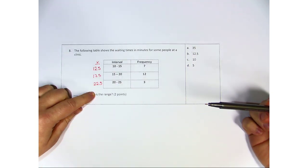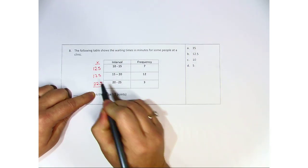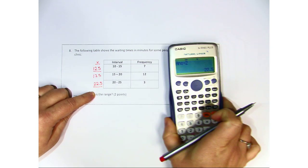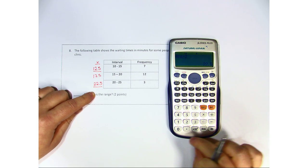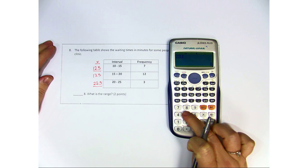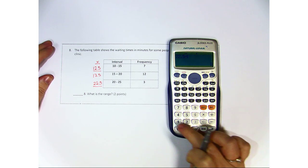the maximum number is 22.5. The minimum number is 12.5. So we're going to take our calculator again, and we're going to do 22.5 minus 12.5.